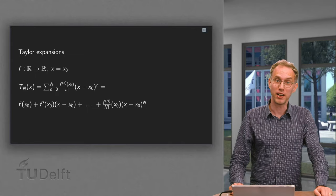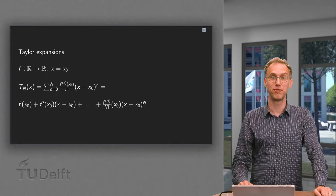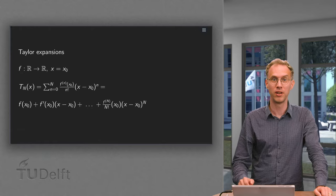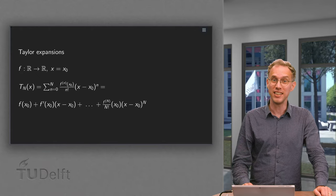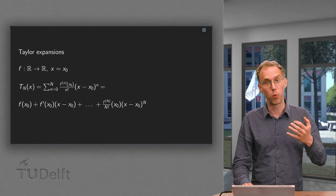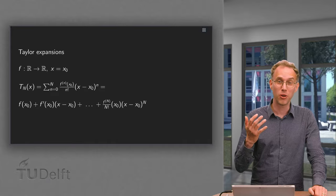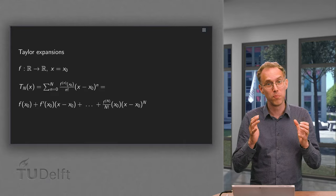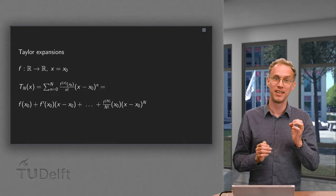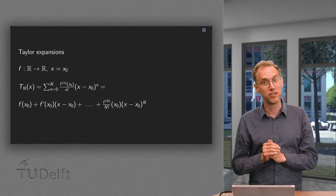Taylor polynomials are very useful to approximate functions around a certain point. You have already seen these polynomials for a function of one variable. Is this also possible for functions of more variables? Yes it is, as you will learn in this video.